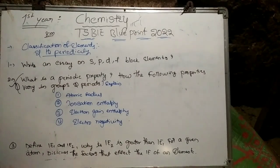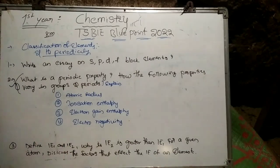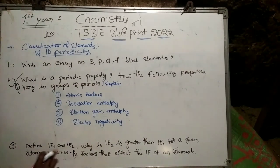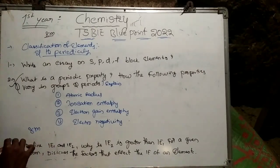The third question is: define IE1 and IE2. Why is IE2 greater than IE1 for a given atom? Discuss the factors that affect the ionization energy of an element. We define first ionization energy and second ionization energy, and explain why the second ionization is greater than the first for a given atom.